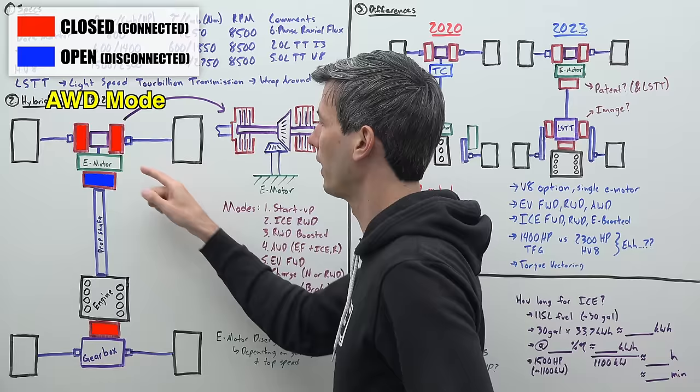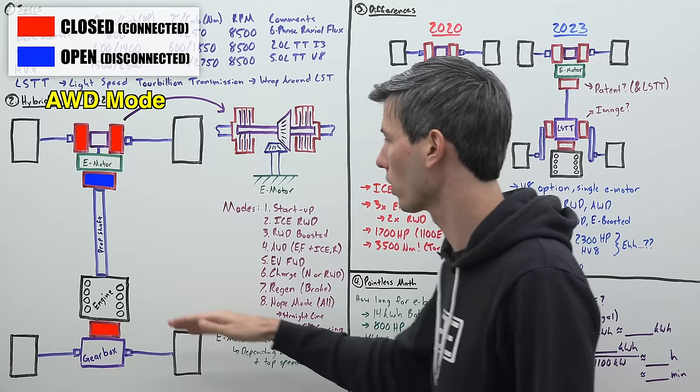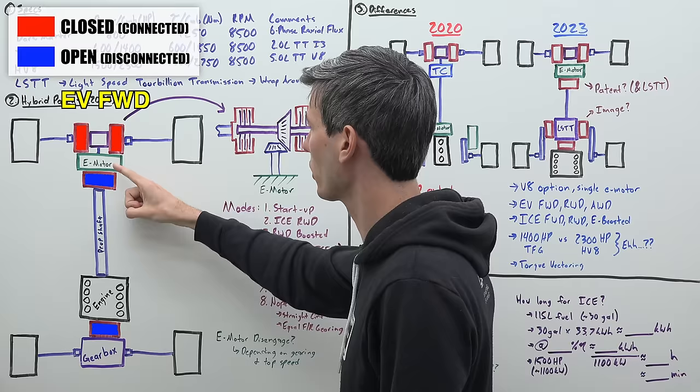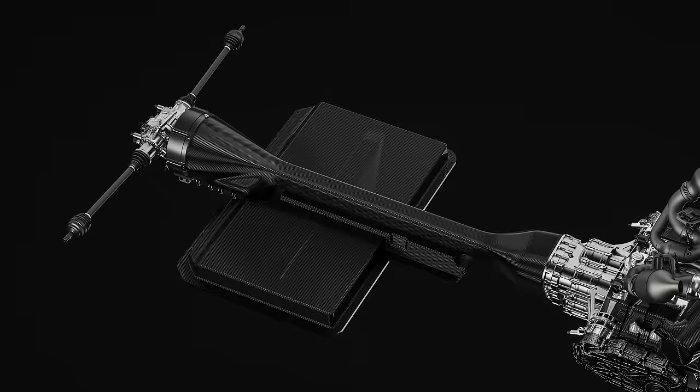Then we can drive in electric front wheel drive. We're going to turn off our engine, open up this clutch, we're going to have this clutch open and we're simply going to engage these front clutches so that we can use the electric motor to send power just to the front wheels driving electric only.